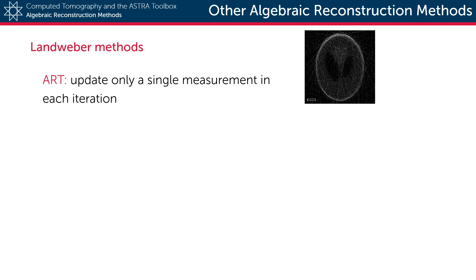In general, this means that the ART algorithm reaches a solution much more quickly than SIRT, but it does not have stable convergence if the system of equations is inconsistent, for example due to noisy measurements.